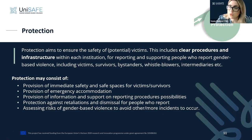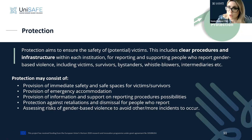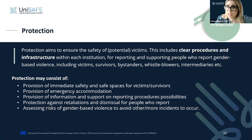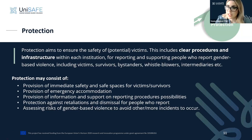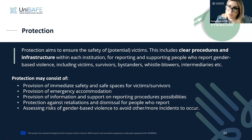Protection means that as an institution we should be able to provide immediate safety and safe spaces for victim-survivors, emergency accommodation, clear information and support on how to report, information about reporting procedures — both informal and formal — and protection against retaliation and dismissal for people who report. We also need to assess the risks of gender-based violence incidents to avoid further incidents and identify patterns within our institution.